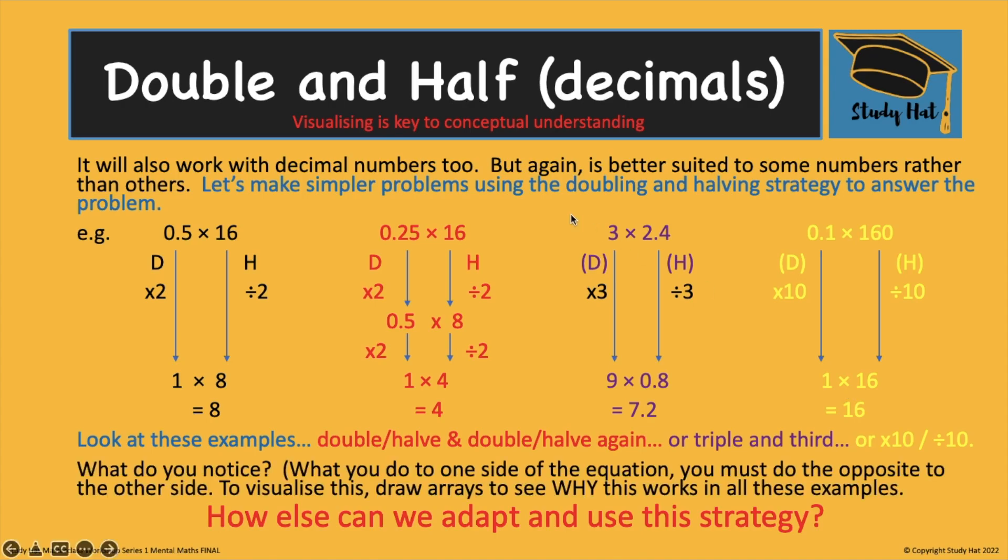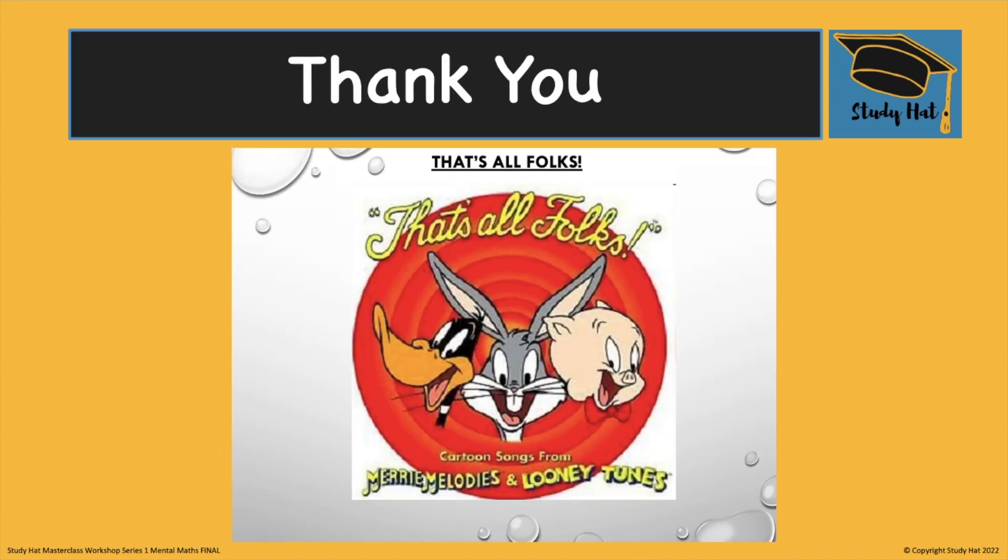It's clear to remember that whatever you do to one side or one factor. If you're doubling it or tripling it. You must do the opposite to the other factor. I hope that clarifies the understanding of doubling and halving with decimals and how it can work. Remember to choose friendly numbers. Remember to think of the rules of 0.5, 0.25. Is it an even number, odd number? That sort of thing to help you decide when to use this strategy. Is it going to help you? I hope to see you in another masterclass soon and if not I'll see you in another video.